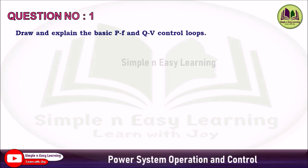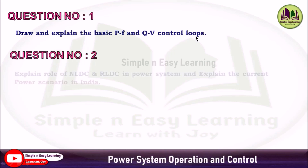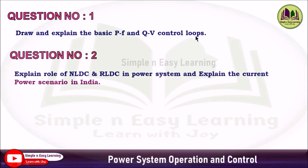Unit 1 Introduction — Question 1 (Priority 1): Draw and explain the basic PF and QV loops — real power frequency and reactive power voltage control loops. This question is very important; keep it at priority one.